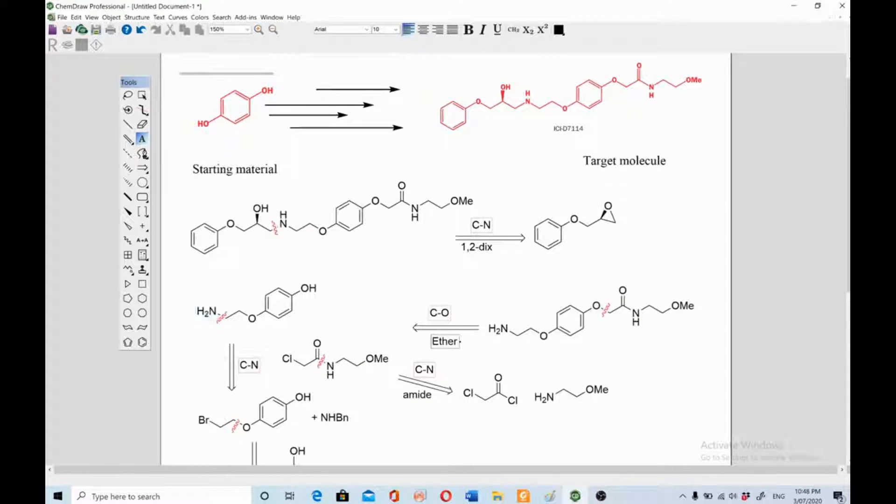If we have to do retrosynthesis of this compound further, recognize the functional group—there's an amide functional group present. The easy way to disconnect this is from the C-N position. The amide on one side will become acid chloride, which is this one, and the other side will become primary amine, which is this one.